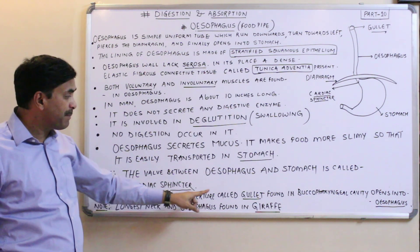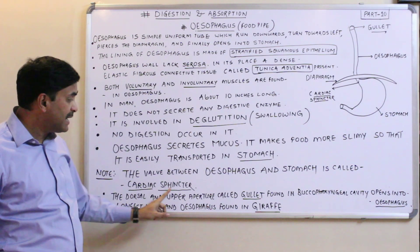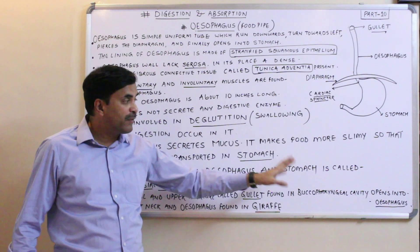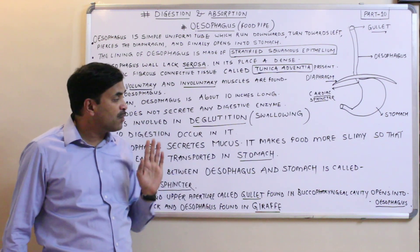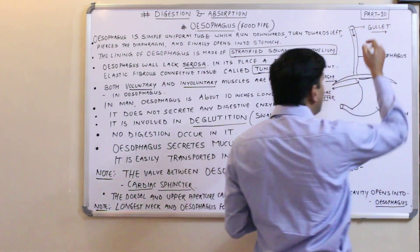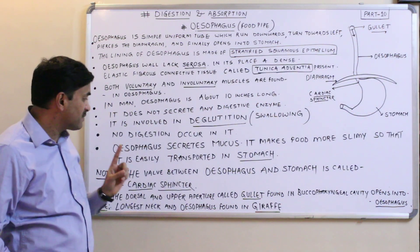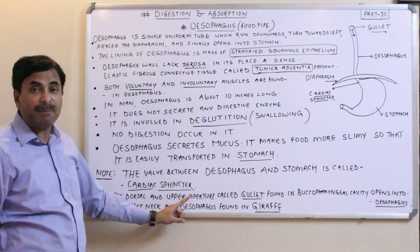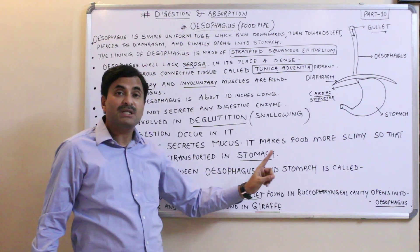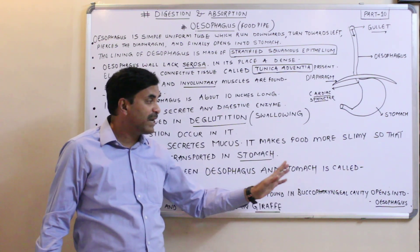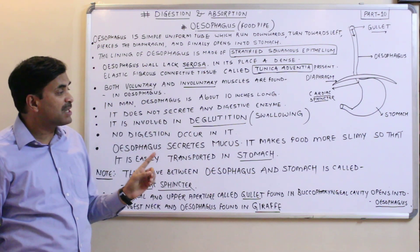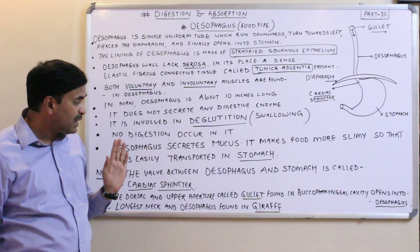The dorsal and upper aperture found in the buccopharyngeal cavity is called the gullet, and this gullet opens into the esophagus.